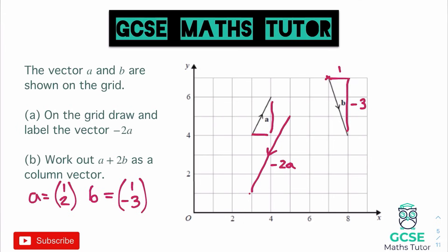Now we've established that, we can treat it just like the earlier questions. We're going to do one A, which is 1 over 2, and add to that 2 of the Bs: 2 lots of 1 on the top is 2, and 2 lots of minus 3 on the bottom is minus 6. Adding those: 1 plus 2 on the top gives 3, and 2 add negative 6 gives minus 4 on the bottom. So our final vector is 3 over negative 4.